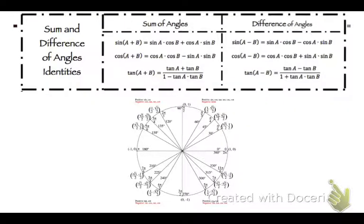So if you have your unit circle, pull it out right now. If not, you can just use the one that's on screen, but I need you to be able to look at that unit circle and really understand what we're doing with it. This is the sum and difference of angle identities — when we're asked to find, like, the sine of 255 degrees. That's not on the unit circle, so we have to use sums or differences to find that.